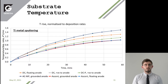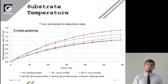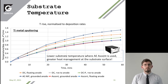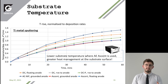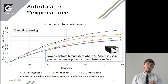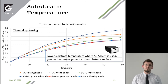This slide looks at different configurations of the anode with different power systems — DC, DC pulsed, alternating current medium frequency, and then with the square wave of the Ascent. We tended to see a lower substrate temperature when the Advanced Energy Ascent was used, indicating that using the Ascent gives you greater heat management at your substrate surface.